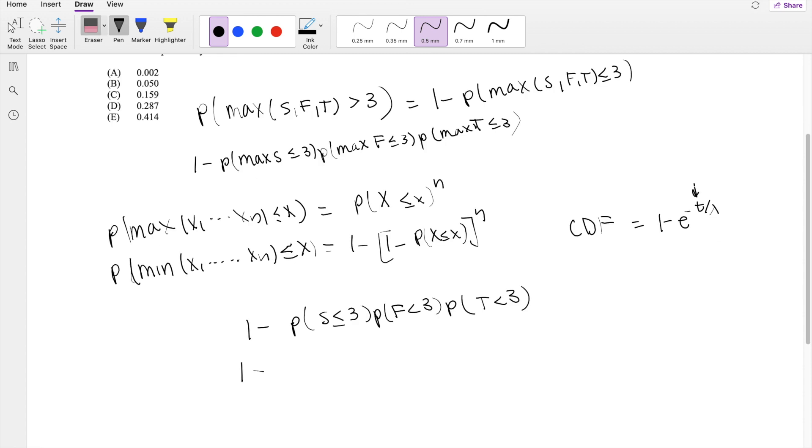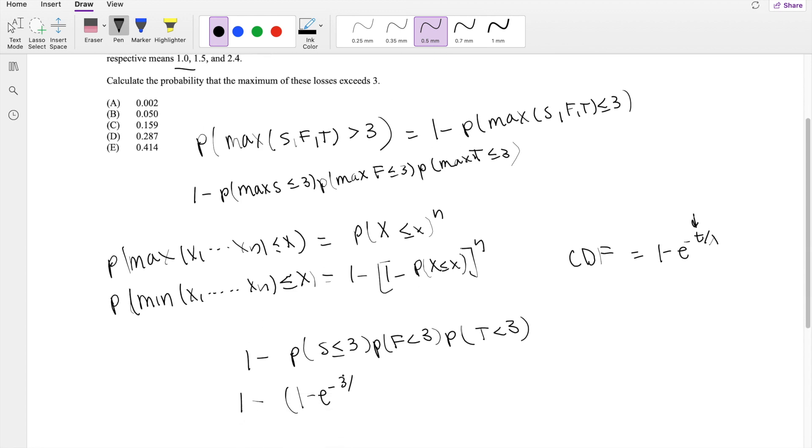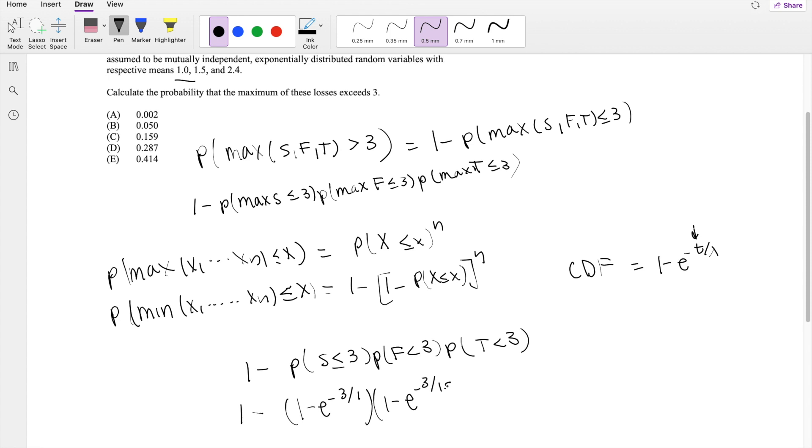So for S, it's going to be 1 minus e to the negative 3 over lambda, where lambda is equal to 1. And for F, this is the same thing, 1 minus e to the negative 3 over 1.5. And finally, this is 1 minus e to the negative 3 over 2.4, which is equal to 0.414, our answer E.